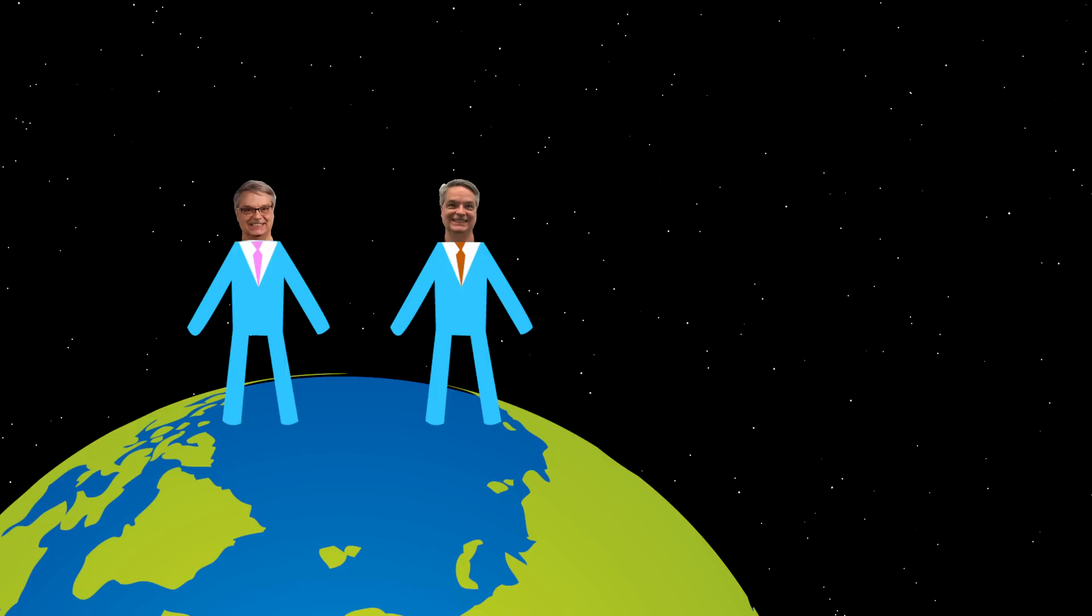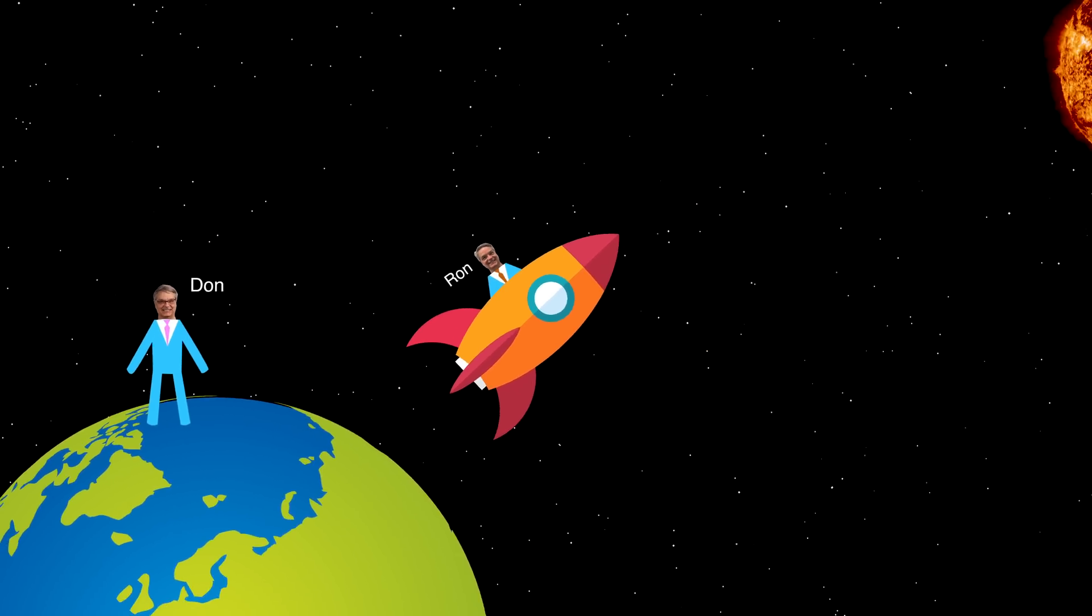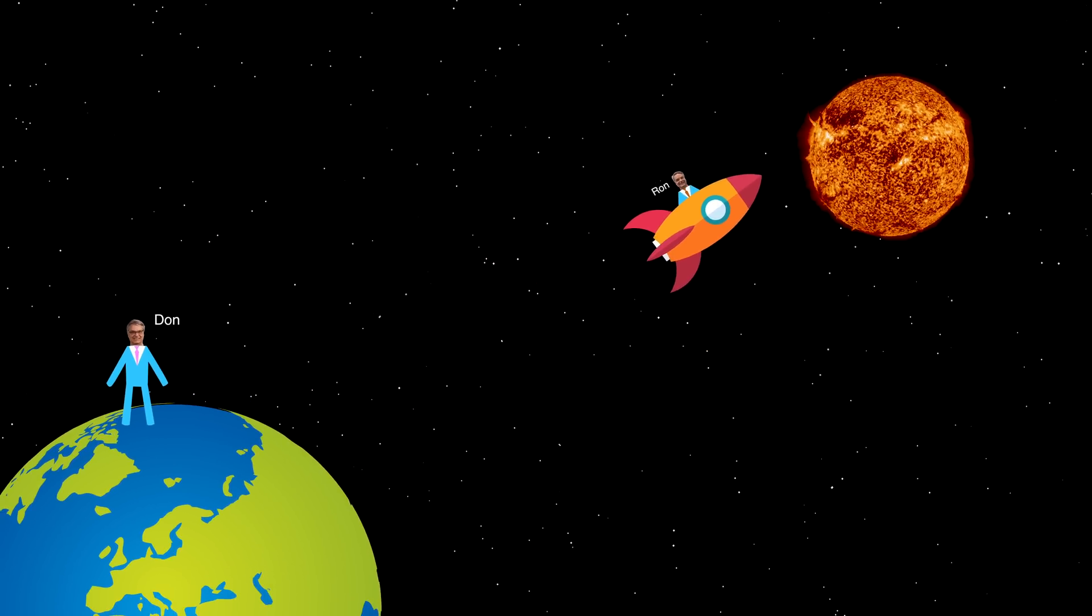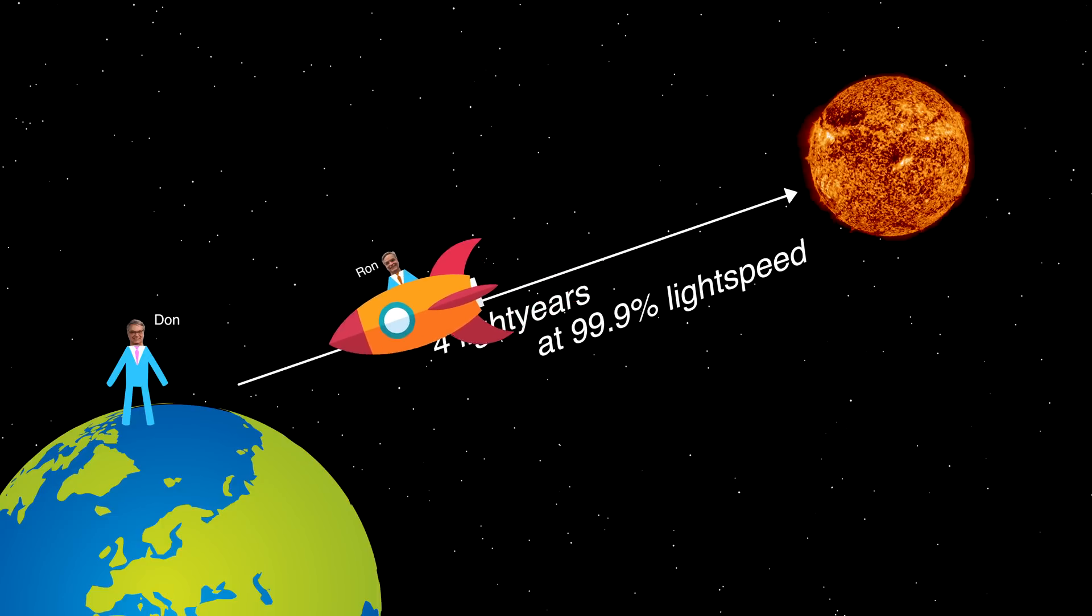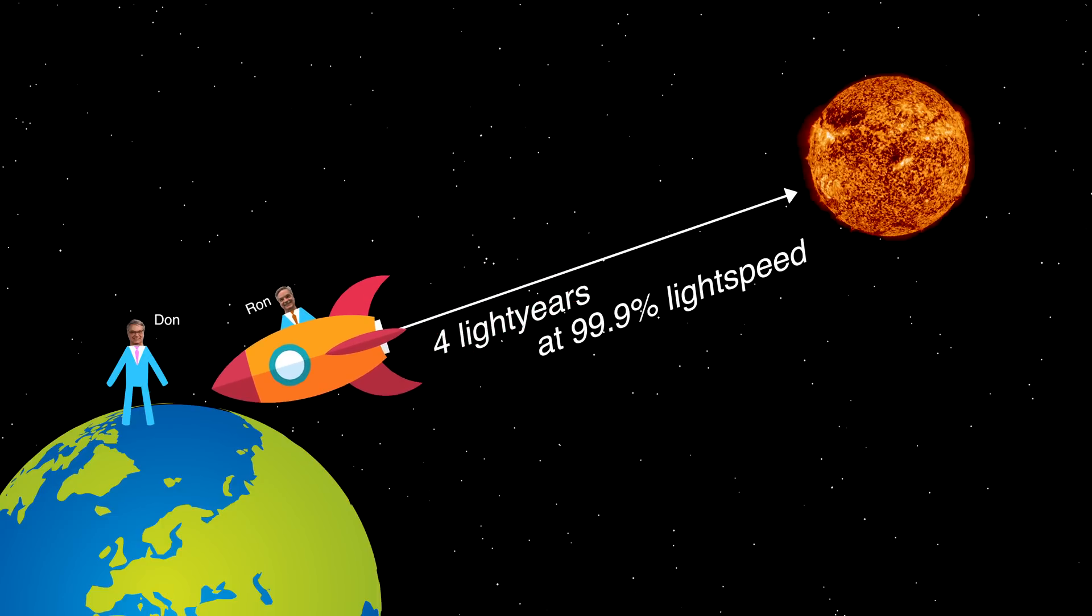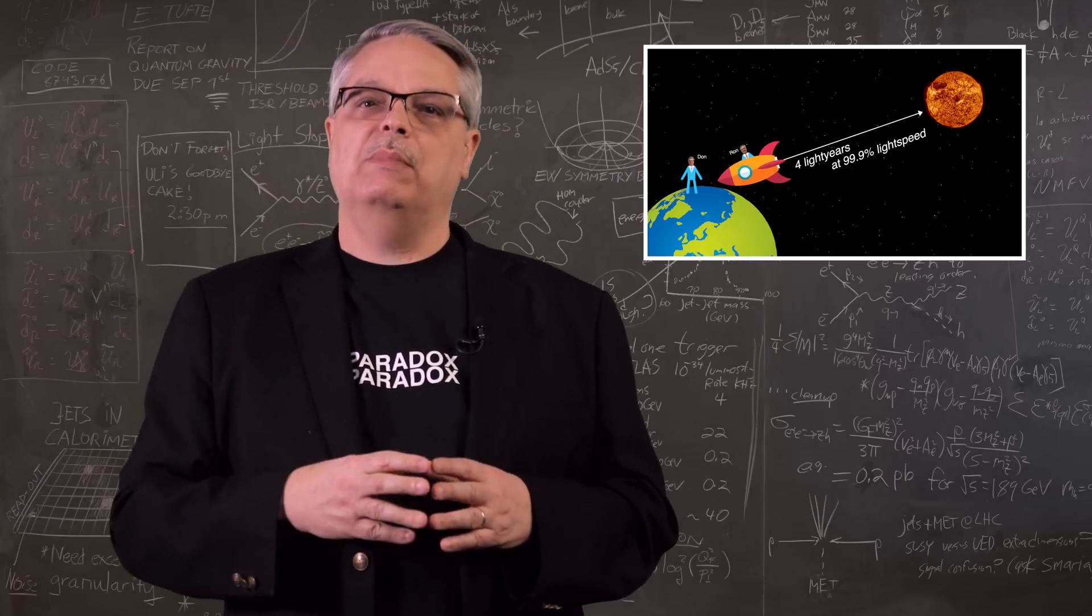Let's imagine that you have a pair of twins called Ron and Don. Don stays here on Earth while Ron heads off to Alpha Centauri, call it four light years away, at a speed of 99.9% the speed of light. So, for Don, the amount of time the trip takes is basically eight years - four years for Ron to get to Alpha Centauri and four years to get back.